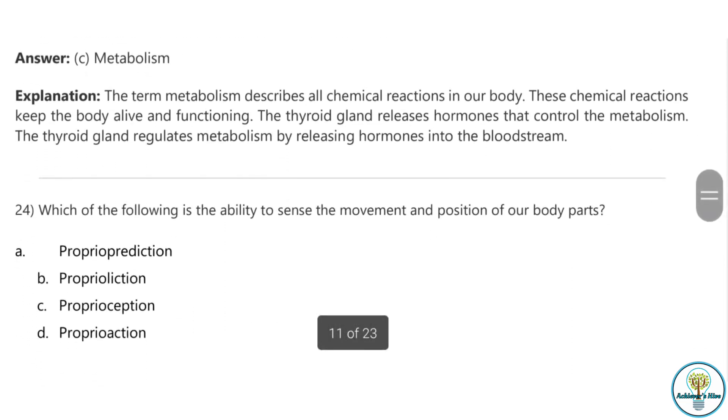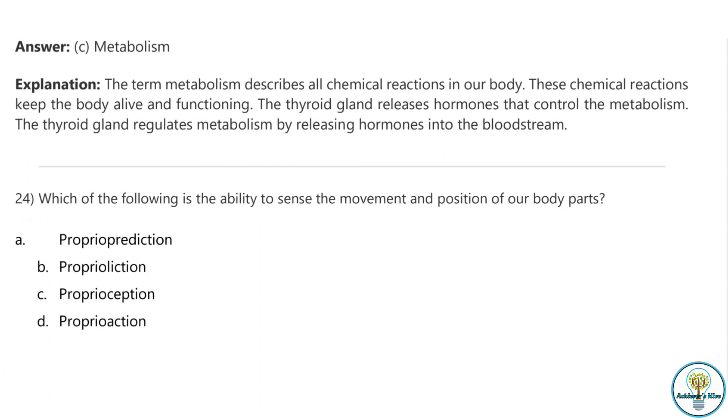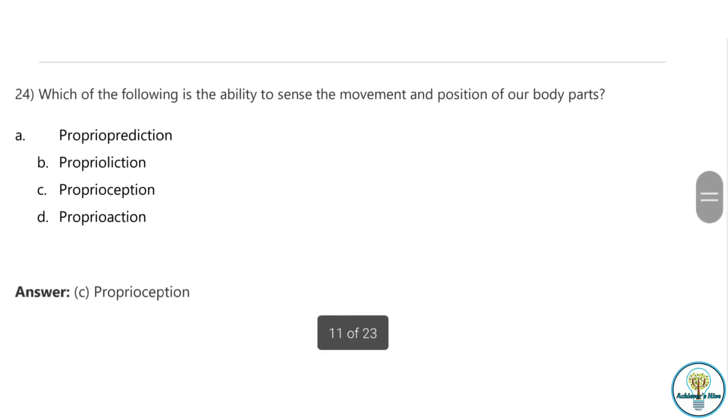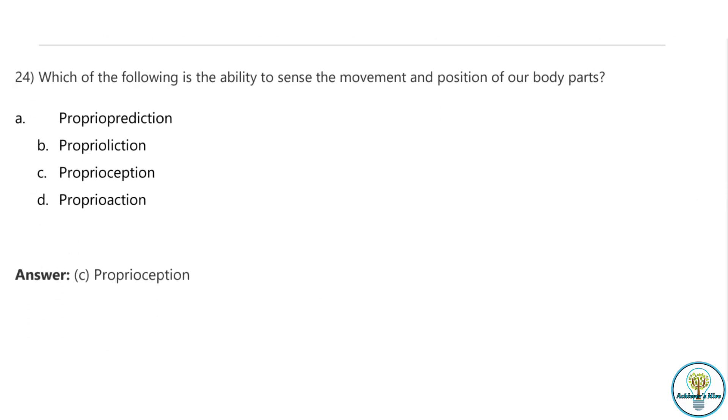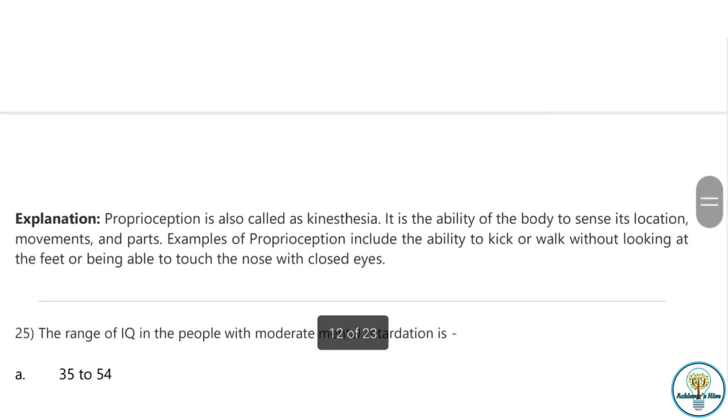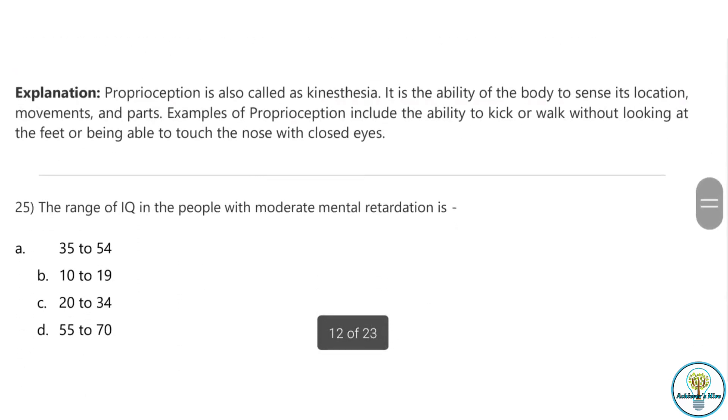Question twenty-three: Which of the following is controlled by the thyroid gland? Glucose, emotions, metabolism, or none of the above. The correct answer is metabolism. Question twenty-four: Which of the following is the ability to sense the movement and position of our body parts? The correct answer is proprioception, which is the ability to sense the movement and position of our body parts. It is also known as kinesthesia.